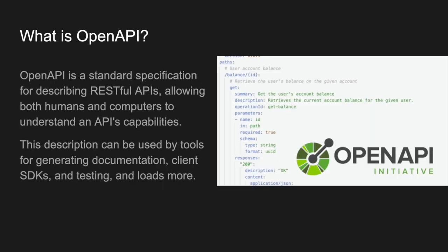First we have to ask ourselves: what is OpenAPI? It's a standard specification that helps you build HTTP APIs — REST or REST-ish — and it's designed to make things easy for humans and computers to understand an API's capabilities. You're writing down everything that an API could or should do in a way that can be read by a computer or a human. This is mostly used for documentation but increasingly it's being used for a lot more.